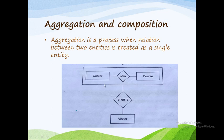Center offers course. This relation between these two entities is combined as a single entity — we frame it as a single entity. The center entity is a college; the college offers a number of courses. Every offer has students — here 'visitor' means student. So students visit the college.